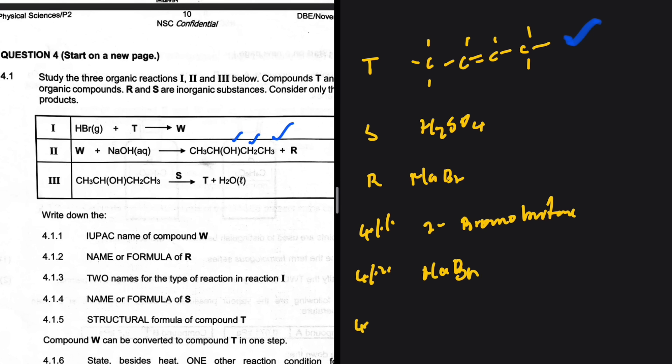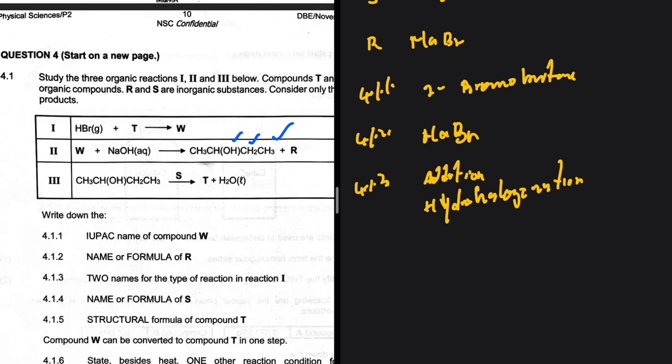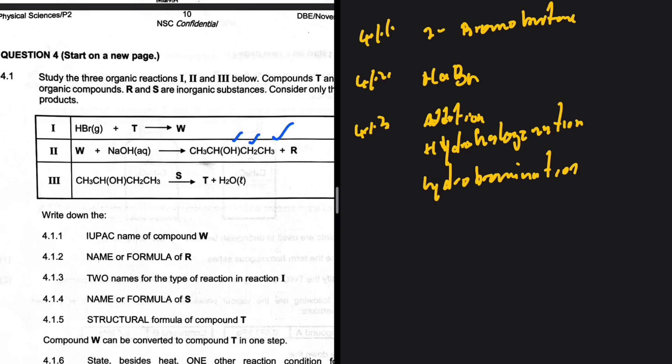4.1.3, two names for the type of reaction in reaction 1. In reaction 1 we have an addition reaction, because T is an alkene and all reactions that start with an alkene are addition reactions. But to be specific, it is a hydro-halogenation. To be more specific, it is a hydrobromination. I don't know where they want us to go there, but I think those are all the names for that.